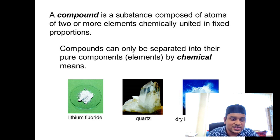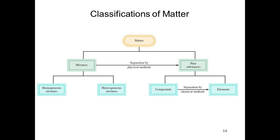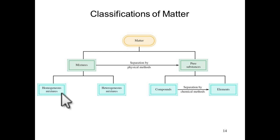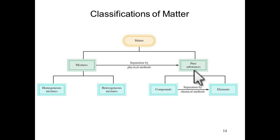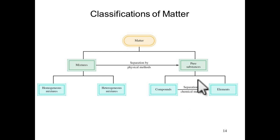Those are compounds. As you can see, we have introduced the classification of matter. Matter can be separated as a mixture — either homogeneous or heterogeneous — where homogeneous has no phase separation. A pure substance can be either a compound such as O₂ (oxygen gas), or it can consist of elements only, such as gold (Au) or silver (Ag). Those are the differences between compound and element.